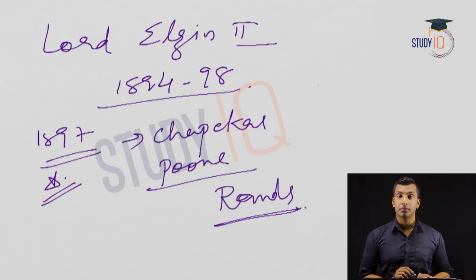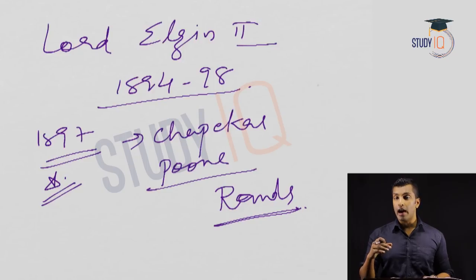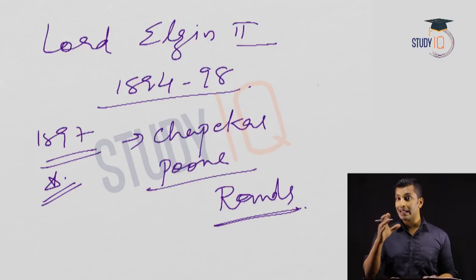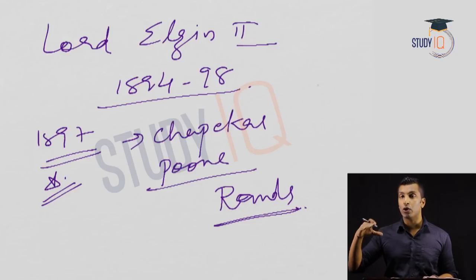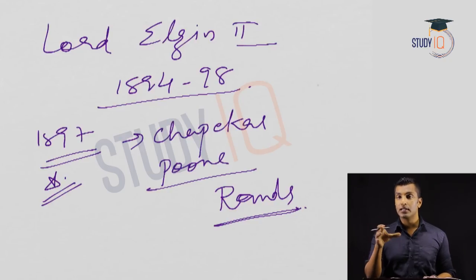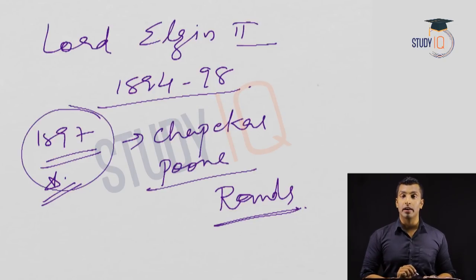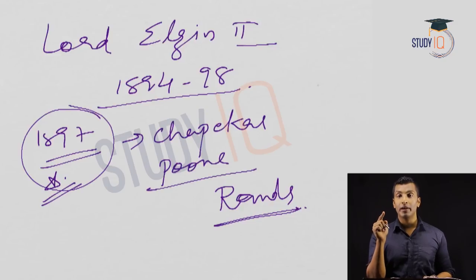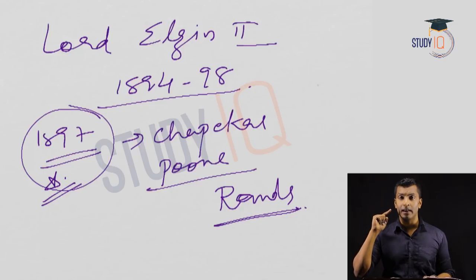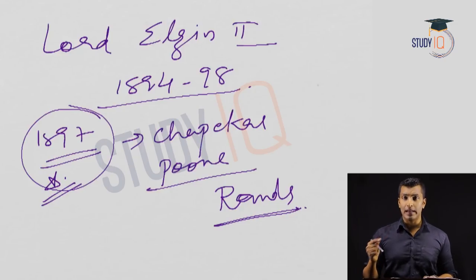This is important because it is the first political murder of a British official during the freedom struggle. After this, you can see a series of attacks against English officials by revolutionaries. The significance is that this was the very first political murder against a British official during the freedom struggle.